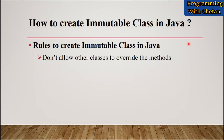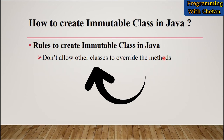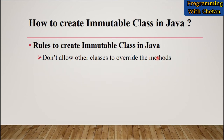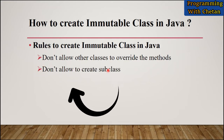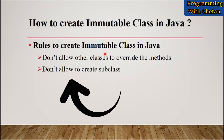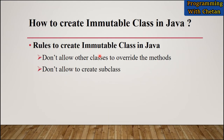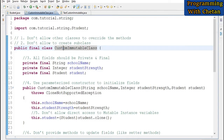Our first rule is: don't allow other classes to override the methods declared inside our immutable class. Our second rule is: don't allow the creation of subclasses of our immutable class, which means no other class should be able to extend our immutable class.